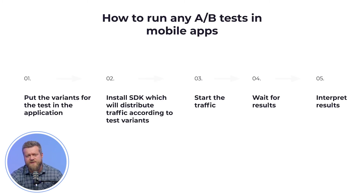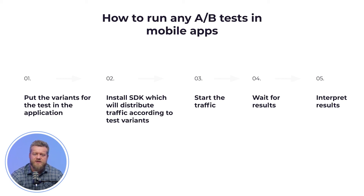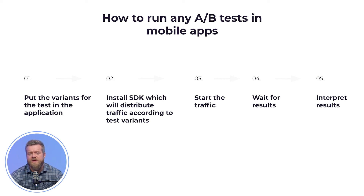Now let's talk about the mechanics: what you need to do to run an A-B test regardless of the service you use. First, you need to load all the features you want to test into the application itself. Unlike A-B tests of websites where you can implement a separate version of a page, with mobile apps it's necessary to integrate all new features into the app itself. Next, you need to install the SDK, which will distribute the audience and show one or another option to the user. After that, we can start the traffic — in classic A-B tests we use new users, but in some cases we can use the existing audience. Then we wait until the necessary sample is accumulated and we get statistically reliable results.